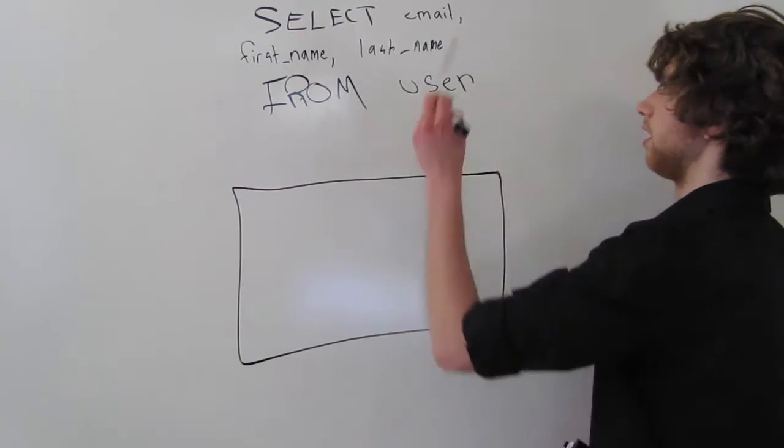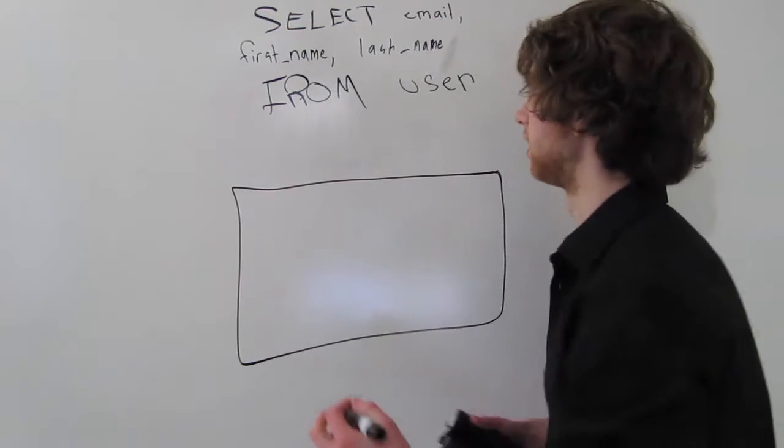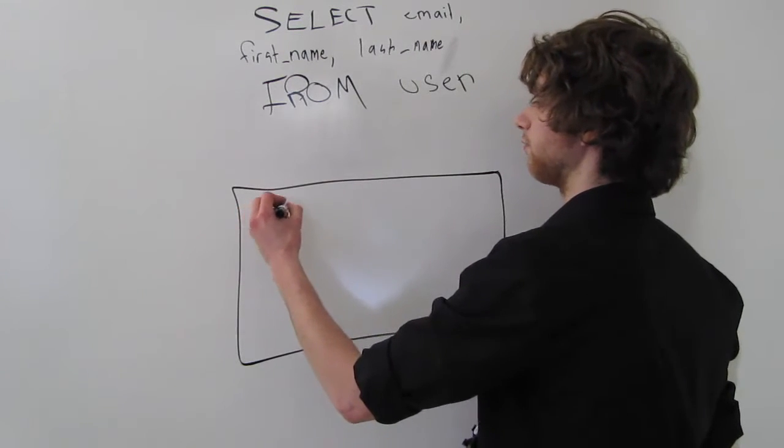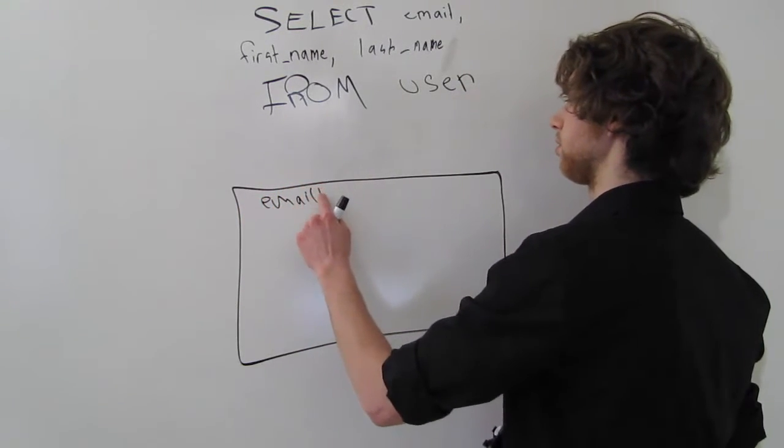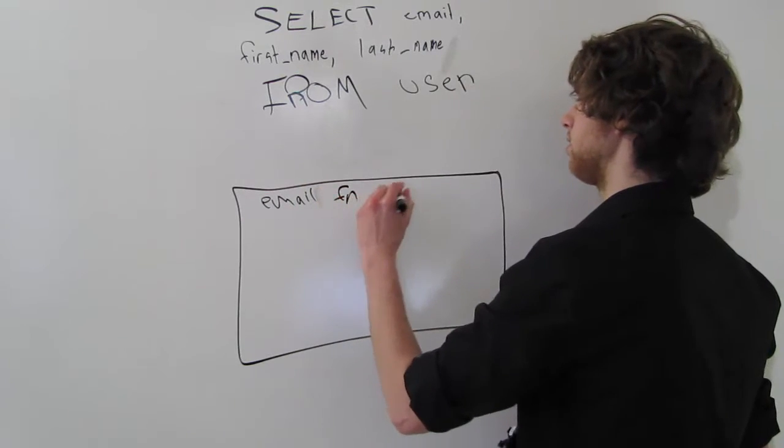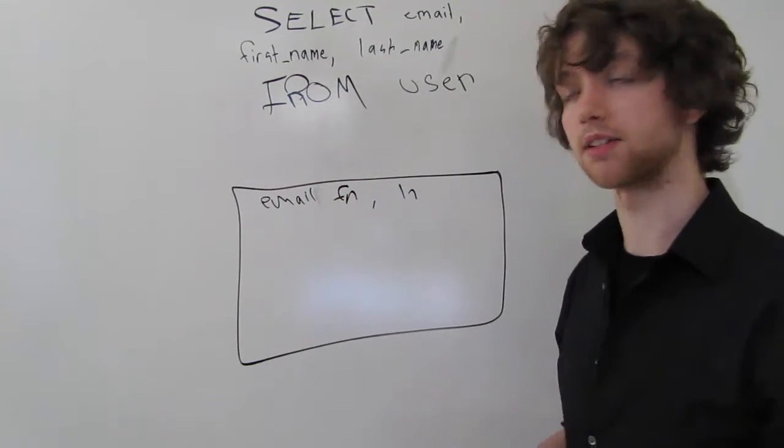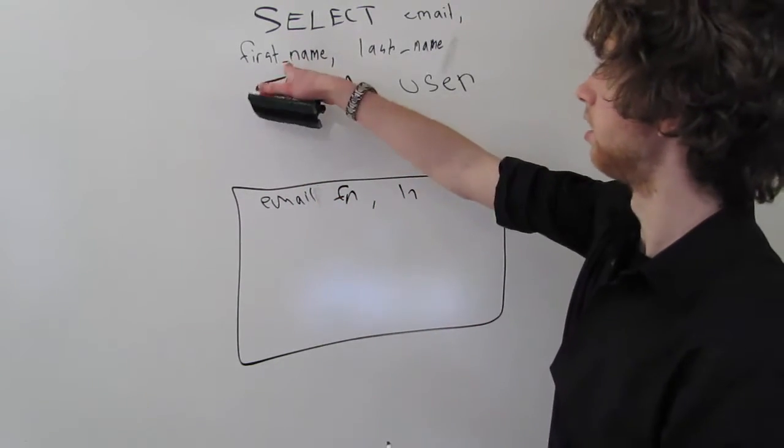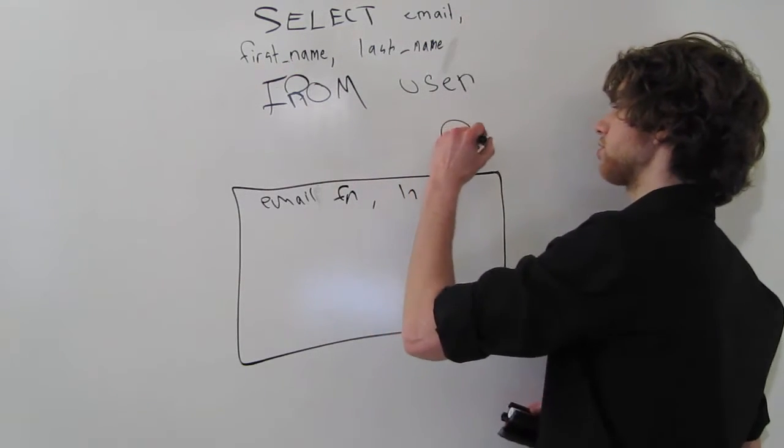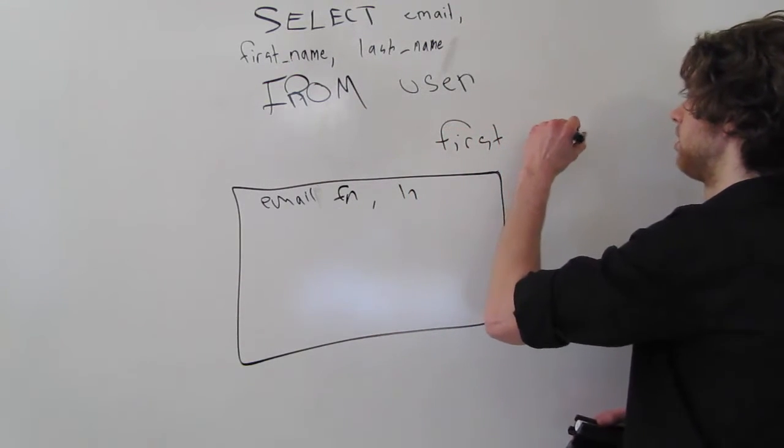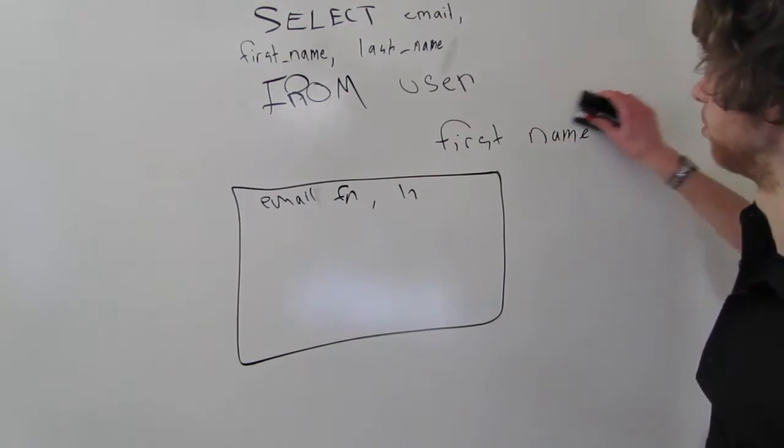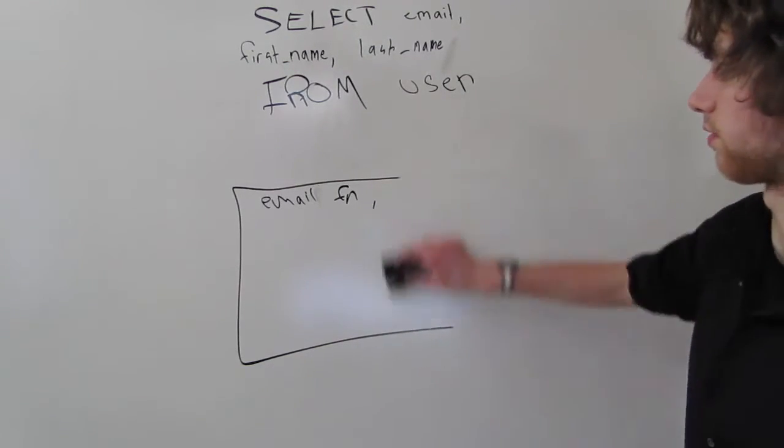Rather than saying email, first name, or last name, you can make it say email, fn ln for first name, last name. Or you can take out that underscore, and you can replace it with first, space, name. This works similar in the way that the other alias works for the tables.